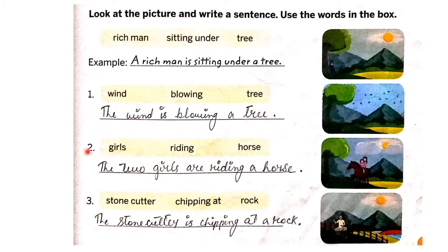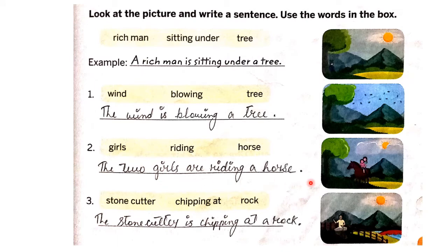Next, number two: girls riding a horse. Two girls are riding a horse.